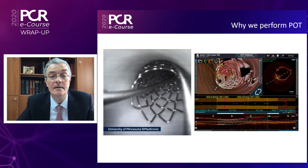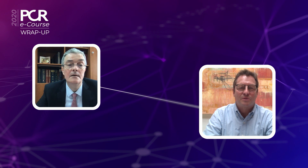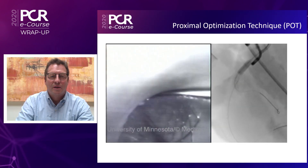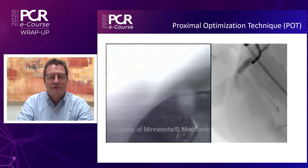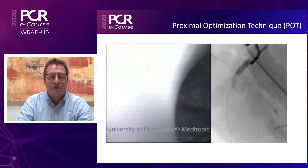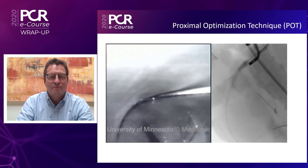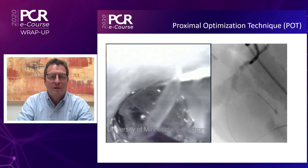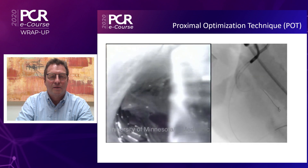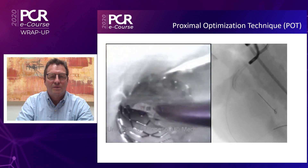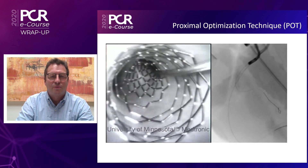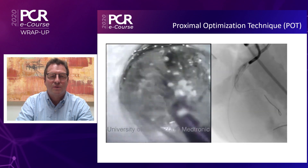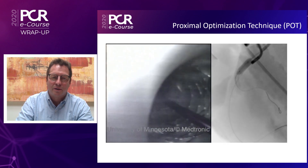What's next? Here we can see how proximal optimization is actually performed: a shorter non-compliant balloon fitted to the proximal vessel diameter, with a jailed wire still in place. After balloon removal, you can appreciate how nicely everything is scaffolded, though the side branch is now jailed.